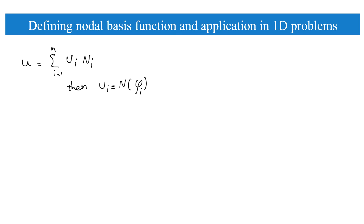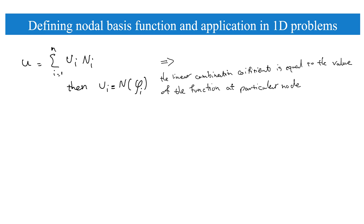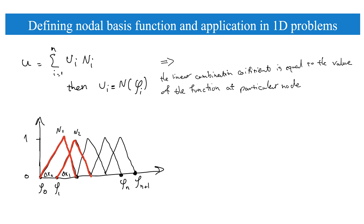For nodal basis functions, not only is the solution a linear combination of the basis functions, but the combination coefficients u_i are equal to the value of the function at each particular node — so u_i equals u(phi_i). For a one-dimensional problem with n degrees of freedom, we have basis functions phi from 0 to n+1. These nodal basis functions also satisfy the zero boundary conditions required by our problem.